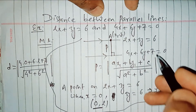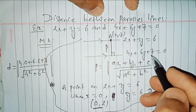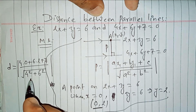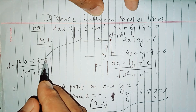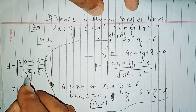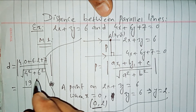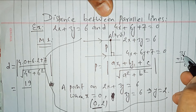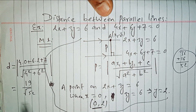Substituting into the formula: the numerator is 4 times 0 plus 6 times 2 plus 7, which equals 0 plus 12 plus 7 equals 19. The denominator is the square root of 4 squared plus 6 squared, which is the square root of 16 plus 36 equals the square root of 52.